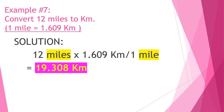Example number seven: Convert 12 miles to kilometers. 1 mile is equal to 1.609 km. Solution: 12 miles times 1.609 kilometers over 1 mile — cancel the mile, which is highlighted. 12 times 1.609 gives you the answer of 19.308 kilometers.